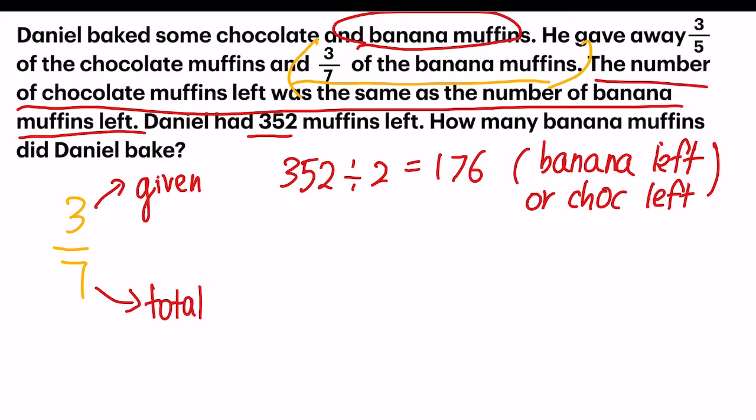So how many units was left? I'm going to take one minus three-sevenths. I get seven out of seven minus three-sevenths equals four out of seven. That means I have four units that is left.